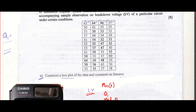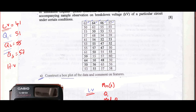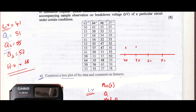Please confirm your answer — I did it very fast. I got the lowest value to be 41. If these answers are not correct, please comment below so I can correct them. Quartile 1: 51. Quartile 2 (median): 55. Quartile 3: 57. Maximum value: 68. Now draw a line parallel to the x-axis and mark the numbers. The smallest number is 41, so mark 40, 50, 60, 70. You can choose any scale you like.